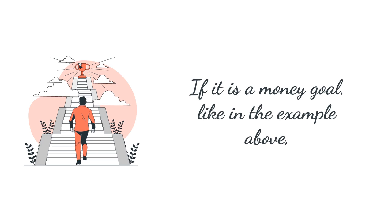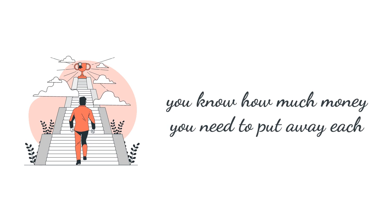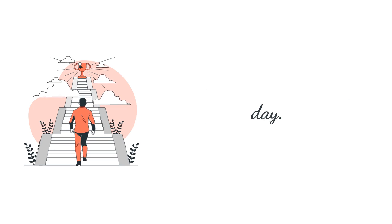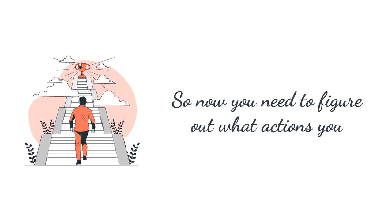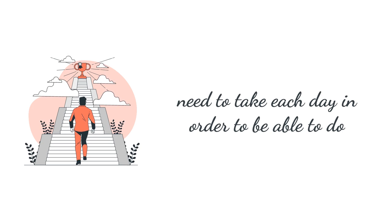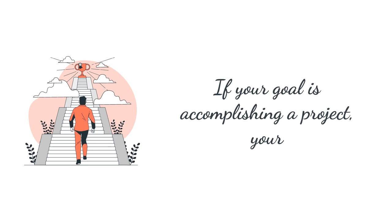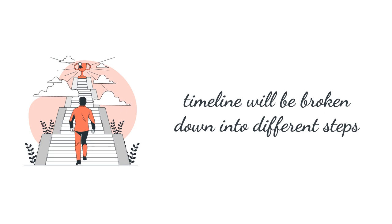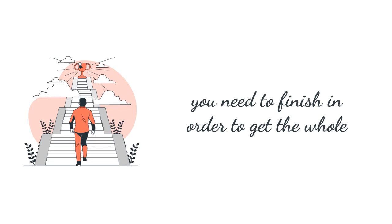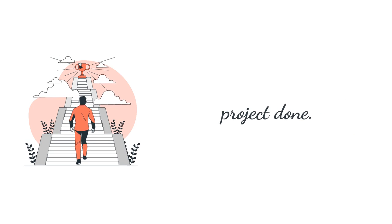If it is a money goal, like in the example above, you know how much money you need to put away each day. So now you need to figure out what actions you need to take each day in order to be able to do that. If your goal is accomplishing a project, your timeline will be broken down into different steps you need to finish in order to get the whole project done.